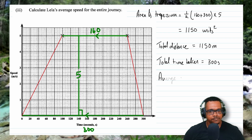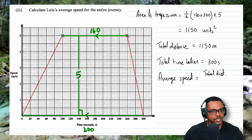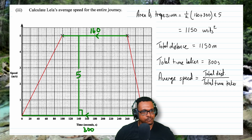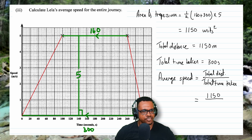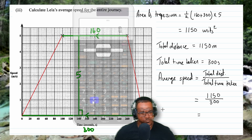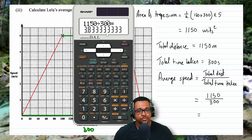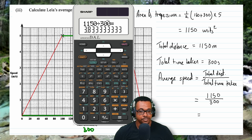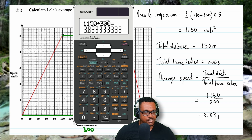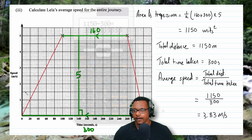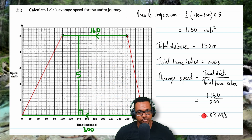Now the average speed equals total distance over total time: 1150 divided by 300. This gives a non-exact answer, approximated to three significant figures as 3.83 meters per second. This is Leah's average speed for the entire journey.